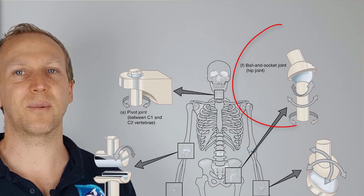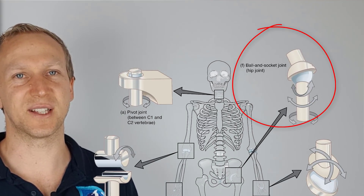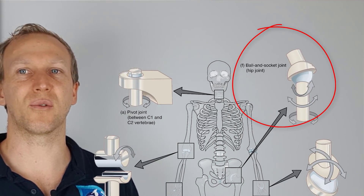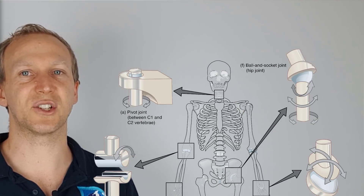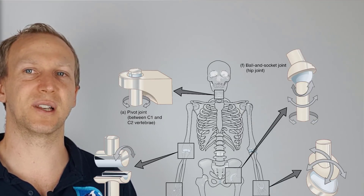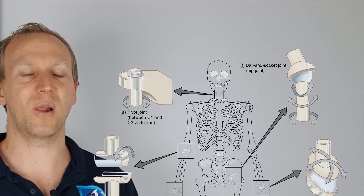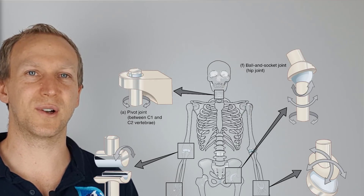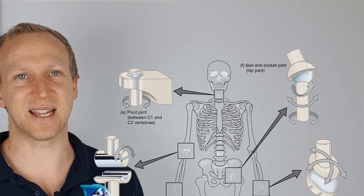Finally, we have a ball and socket joint, such as the hip. This allows movement through three planes — flexion, extension, abduction, adduction, and rotation — and is the most mobile of all the synovial joints, but also the most unstable.